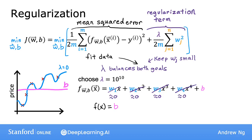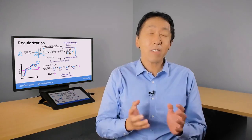To recap: if lambda is zero, the model overfits; if lambda is enormous like 10 to the power of 10, the model underfits. What you want is a value of lambda in between that appropriately balances minimizing the mean squared error and keeping the parameters small. When lambda is just right, you can fit a fourth-order polynomial keeping all features, resulting in a well-fitting curve. That's how regularization works.